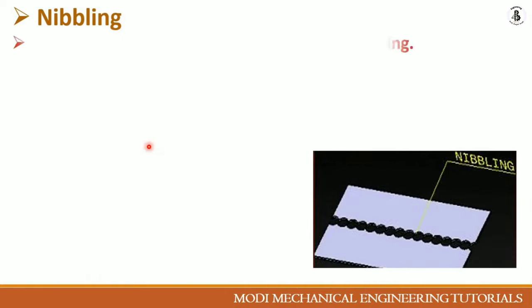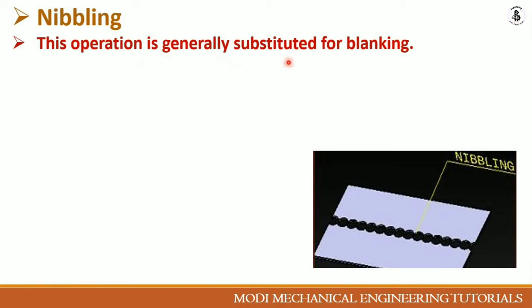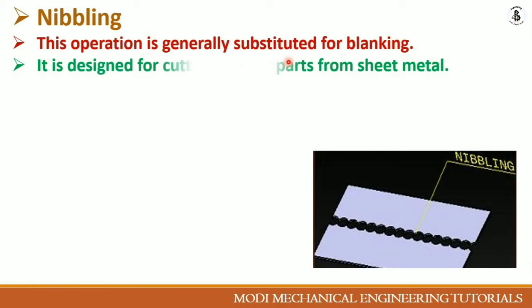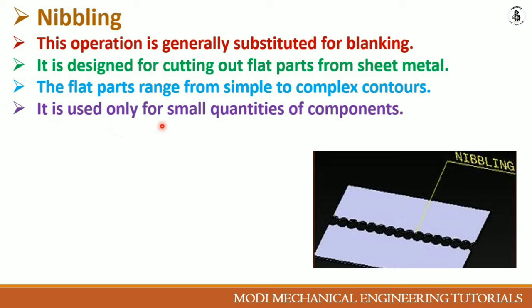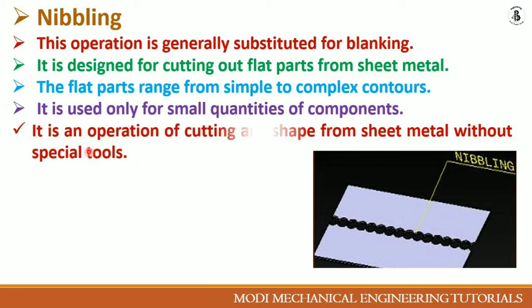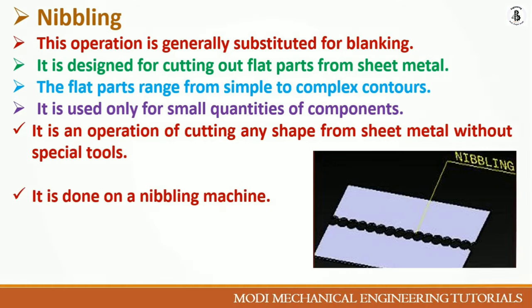Nibbling is generally a substitute for blanking. It is designed for cutting out flat parts from sheet metals, ranging from simple to complex contours depending on requirements. It is used only for small quantities of components. The most important feature of nibbling is that it can cut any shape from the sheet metal without using special tools — a normal punch and die can produce complex geometries. It is done on a nibbling machine.